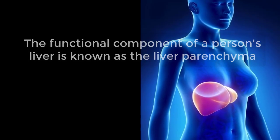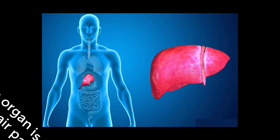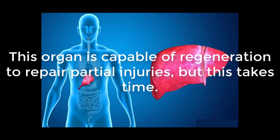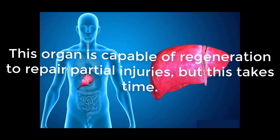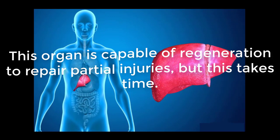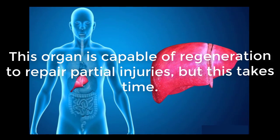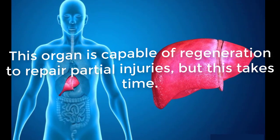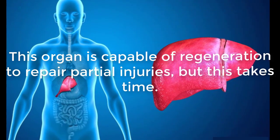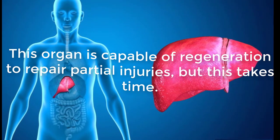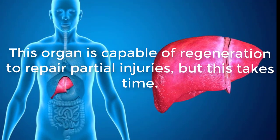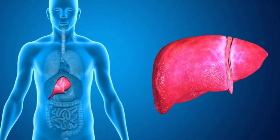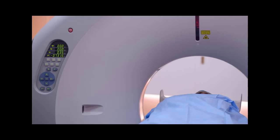These acquired disorders may cause progressive damage to the liver cells. This organ is capable of regeneration to repair partial injuries, but this takes time. If the patient doesn't receive treatment or it is not comprehensive enough, the liver may not be able to recover because the rate of damage outstrips the growth of new cells.